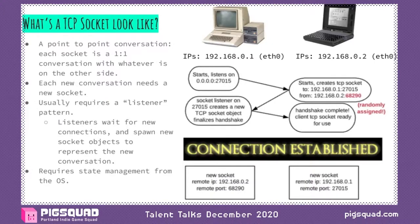Let's get into what a TCP socket actually functions like mechanically. Each TCP socket represents a one-to-one, point-to-point conversation. Every new conversation you need to have as a server requires a new socket for every client connecting. A web browser might create a lot of sockets to talk to a server and request image data, stylesheets, and scripts simultaneously when loading a web page — all going to the same server, each needing a new socket. When you write code with TCP, you have a listener socket on the server listening on a port, and every time a client connects, the server creates a new socket.